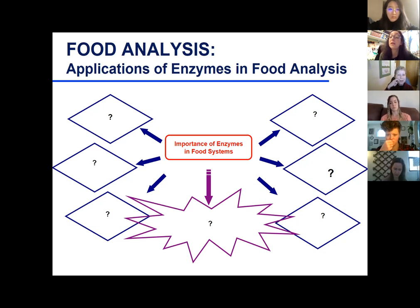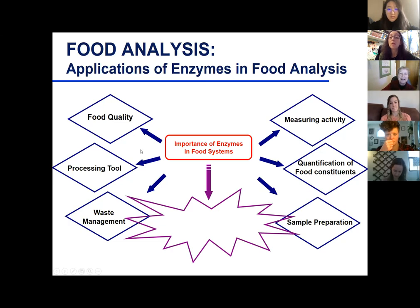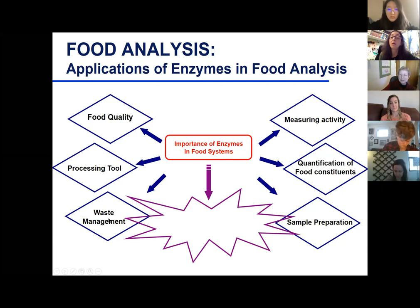We're already getting some answers. We're getting lactase to produce lactose-free milk. We're getting papain and bromelain for meat processing. We're getting polyphenol oxidase for enzymatic browning. Invertase was one. Rennet in cheese. And pectinase for juices. Transglutaminase for gluten-free bread — all good examples!